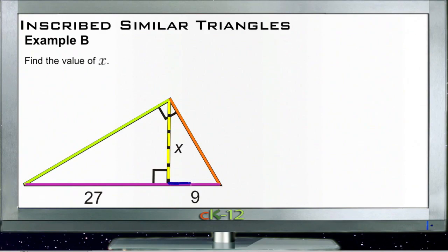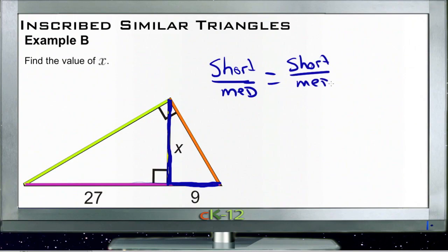So the medium side of the smallest triangle would be here, of one triangle, will be the same as the shortest side. So that would, for the medium triangle, that would be the x again, compared to the medium side of another triangle. So short compared to medium for one should be the same as short compared to medium for another, because they're similar triangles, right?